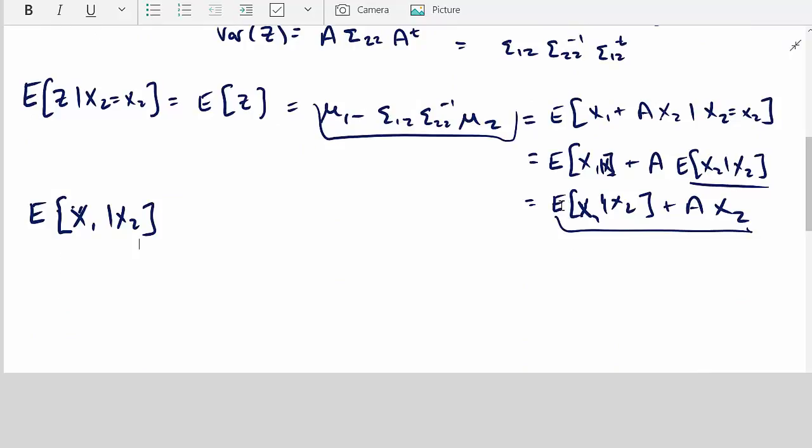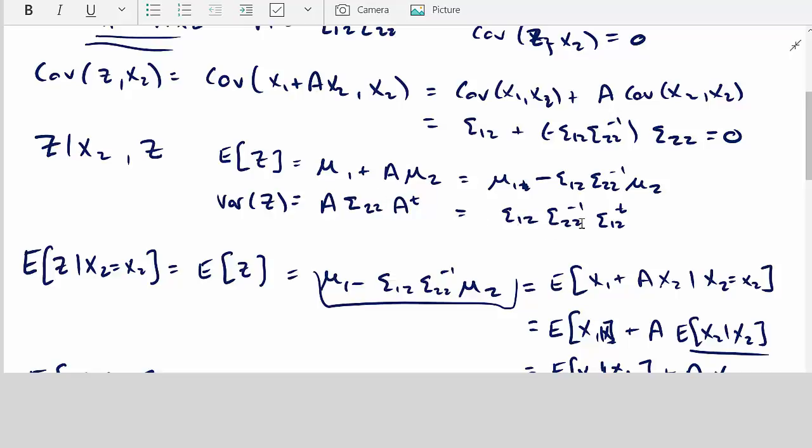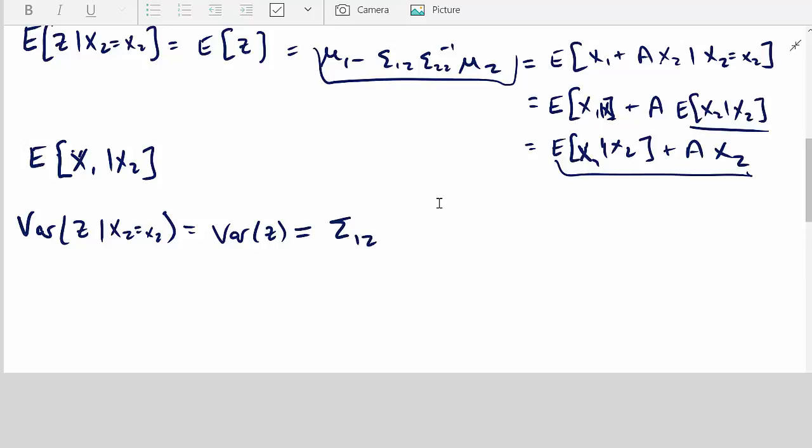And then you can use the same technique to derive the variance. So the variance of z given x2 equals little x2. Well, that's just exactly equal to the variance of z since z is independent of x2. And we can write, we see right up here the variance of z is sigma 1 2, sigma 2 inverse sigma 1 2, sigma 2 2 inverse sigma 1 2 transpose. But then we also know that it's the variance of x1 plus ax2 given x2 because we're just simply rewriting that statement out with the definition of z. And by the rules of variances, we can then apply the variance formula and apply the rules of variance and solve again. And I'm going to ask you to complete the steps for homework.